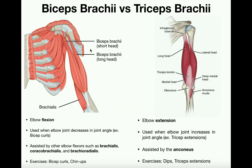The biceps brachii gets its name because it's a two-headed muscle. 'Bi' means two, and 'cep' or 'ceph' means head, so it's a two-headed muscle. It has a short head and a long head. The short head is the medial part, and the long head is the lateral part. Because there are two heads, there are actually two origins of the muscle.